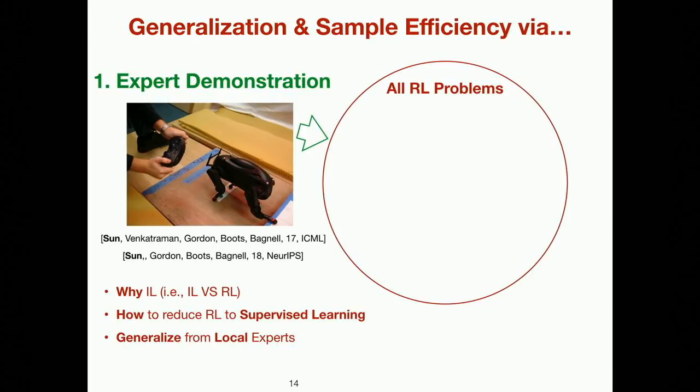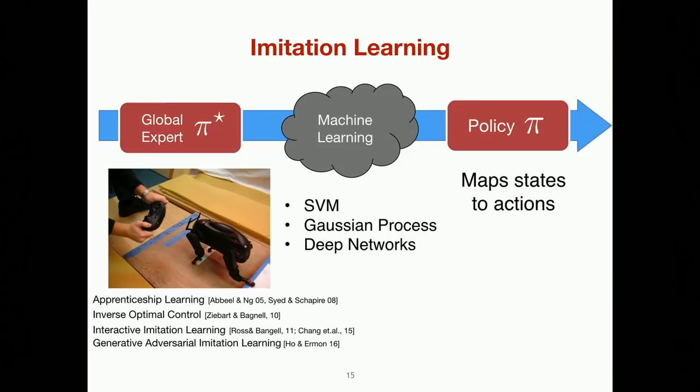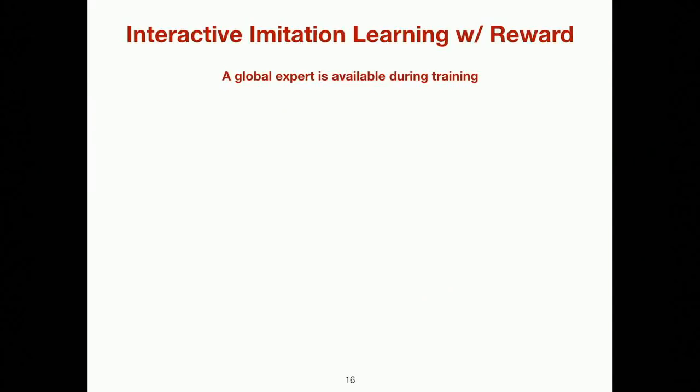Let's talk about expert demonstrations. I'll show first why imitation learning is better than reinforcement learning; second, how we can reduce the sequential decision-making problem into a sequence of supervised learning problems by leveraging expert demonstrations; and third, how we can generalize from a set of local experts. In imitation learning, we usually have three components: an expert that provides demonstrations, a machine learning algorithm that takes the data and computes a policy mapping states to actions, and we deploy this policy at test time.